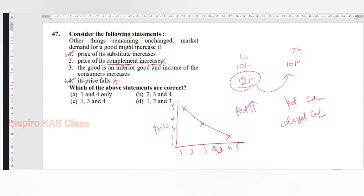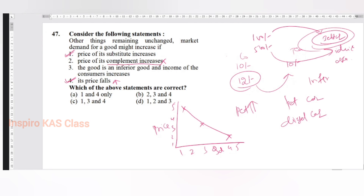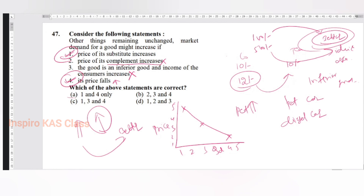Coming to the third one - one fellow was getting a salary of 100 rupees per month and he was eating bread and butter. Now his salary becomes 500. Will he eat more bread and butter or will he shift to idli and dosa? Idli and dosa sir. Because bread and butter are basically inferior goods. Inferior goods go against this rule - if your salary increases, the demand for inferior goods does not increase; you shift to better goods. So this is also gone. 2 is gone, 3 is gone. The answer is 1 and 4.